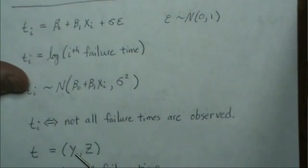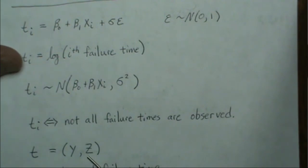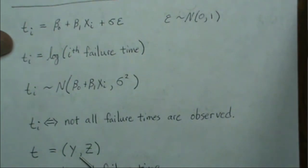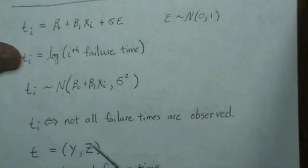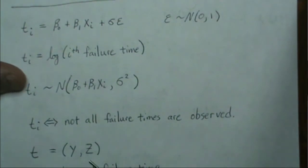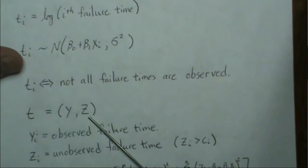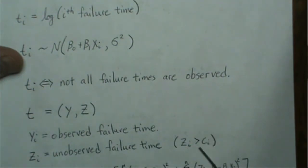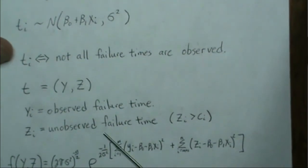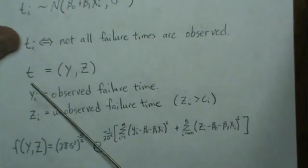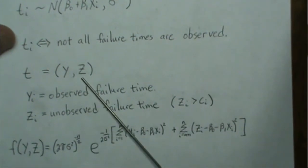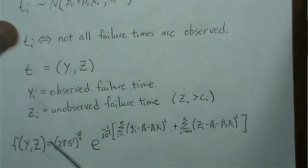We have some observed and some unobserved failure times. If we did observe all of them, they would follow the model. Since we can't observe the censored ones, we need to estimate the beta parameters given what we do know. The yi's are observable, the zi's are not, but we do know the failure times are greater than some censoring value ci.